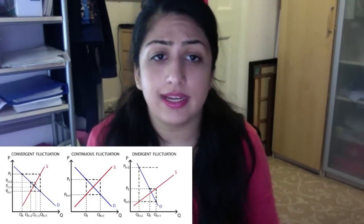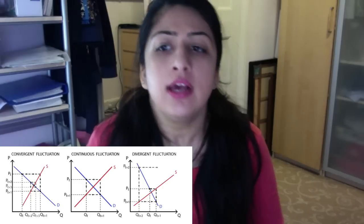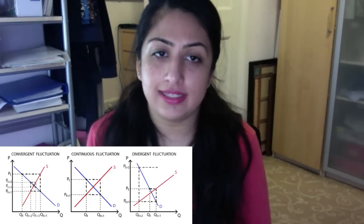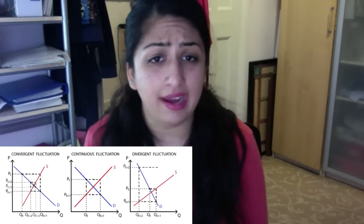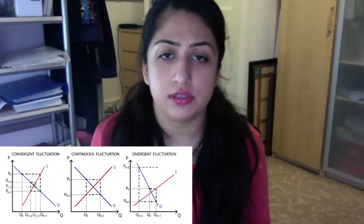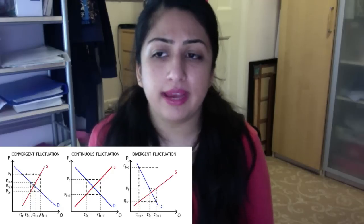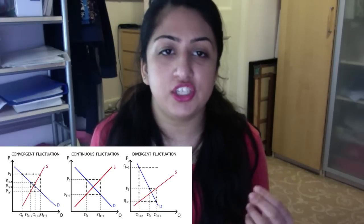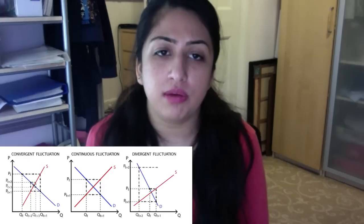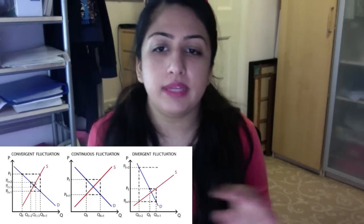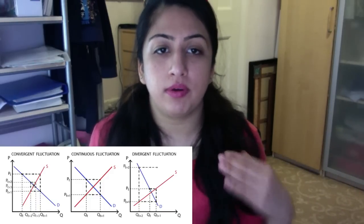Whether a market has a convergent, divergent, or oscillating cobweb depends on elasticities. When supply is more inelastic than demand — as in agriculture, where it's harder to change the quantity supplied in response to a price change — we get a convergent cobweb. When supply changes more quickly than demand — say for a necessity like water — we get a divergent cobweb with much greater price fluctuations.